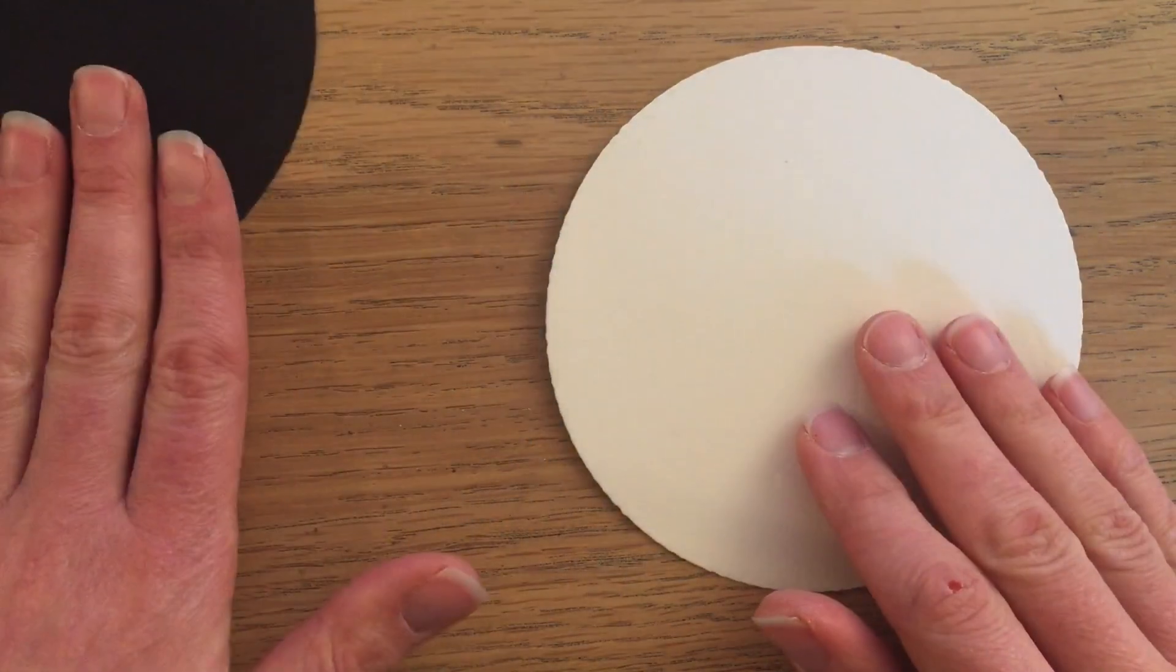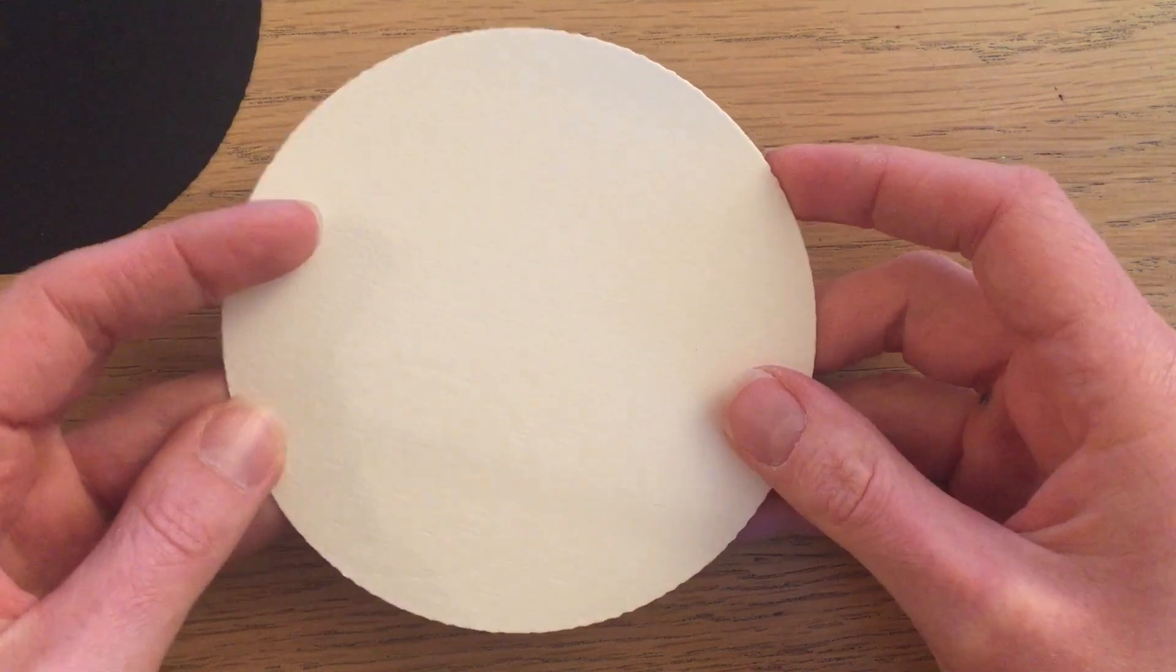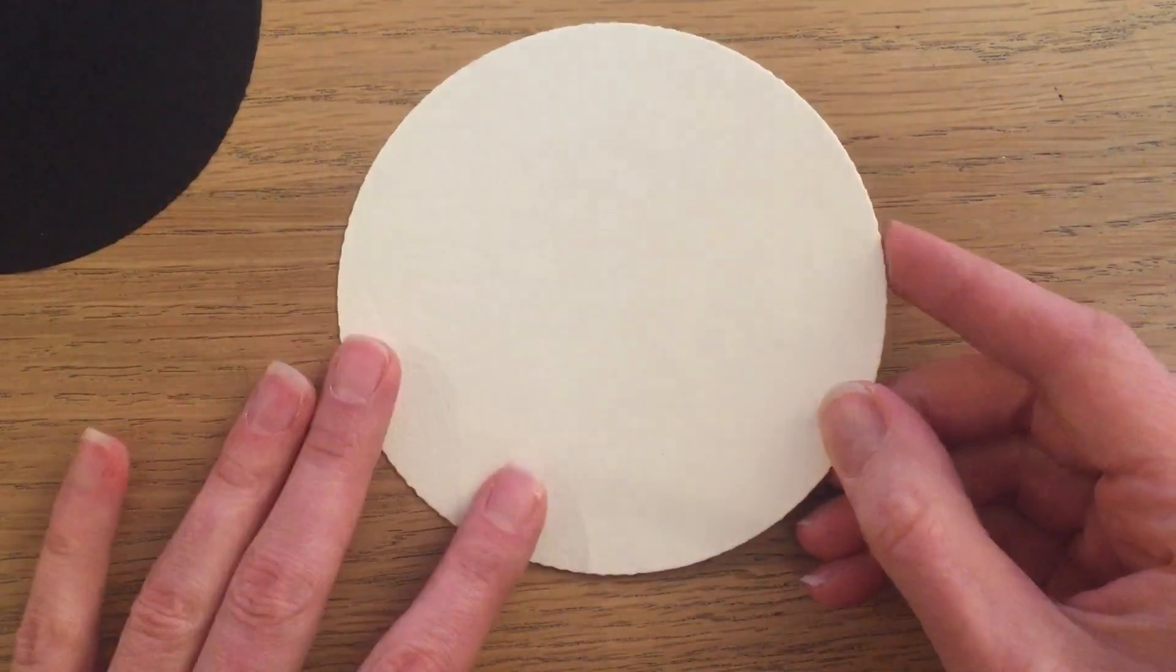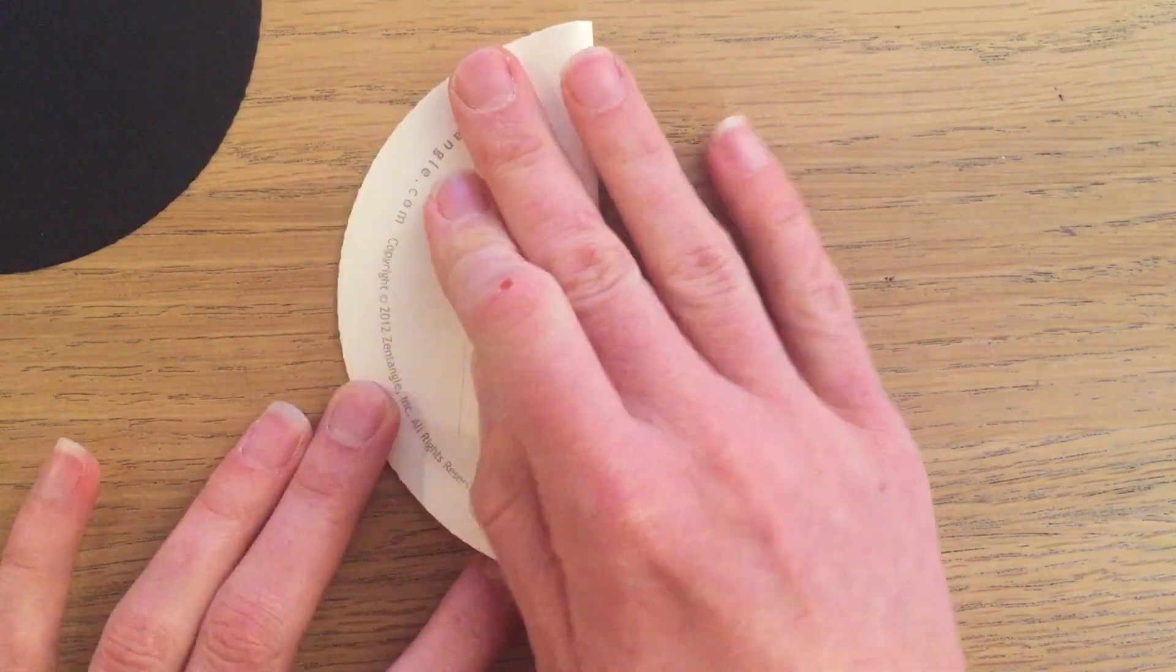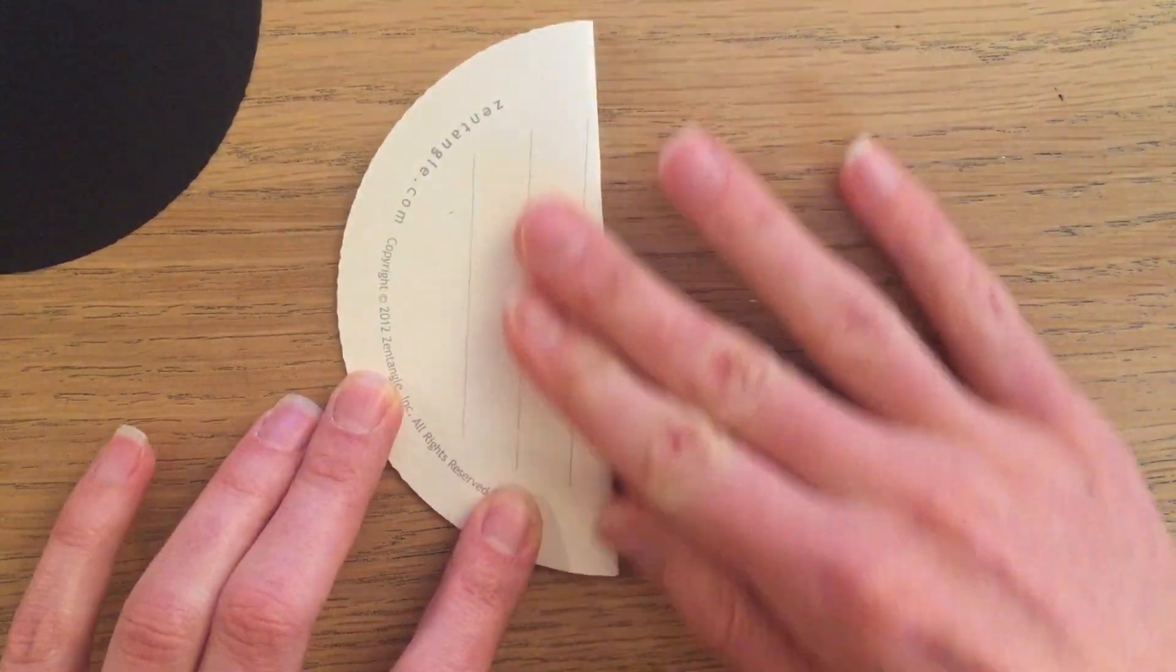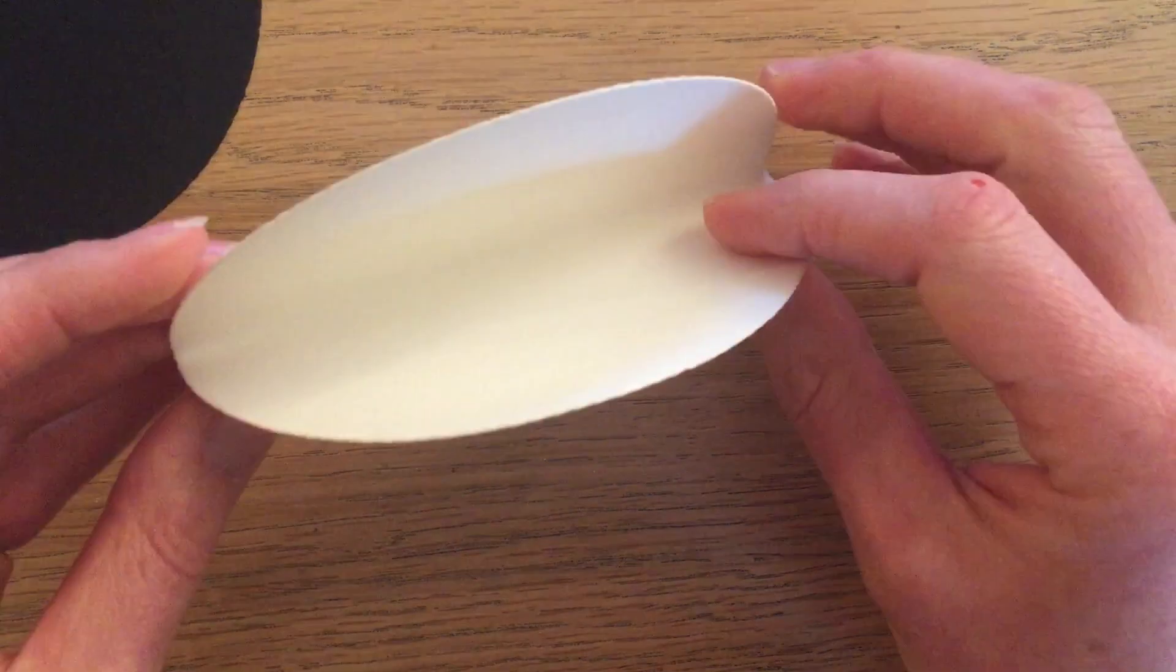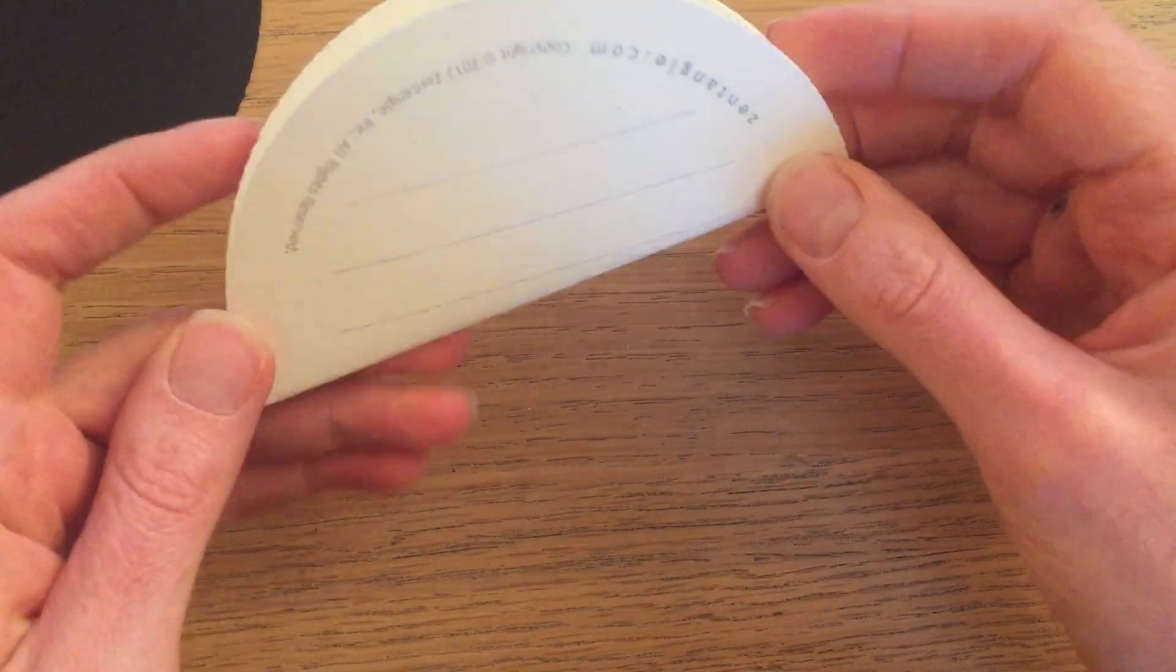So you can put that black zandala aside for a minute and just take the white zandala in your hand, and we're going to gently fold that white zandala in half so that the edges meet up. You don't really need to put too much of a strong crease on it, just a nice soft fold. We don't want to fold it too much. To me it looks like a taco shell, with a nice soft fold on the bottom.